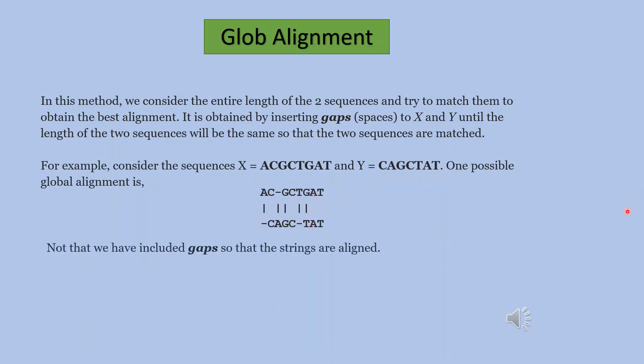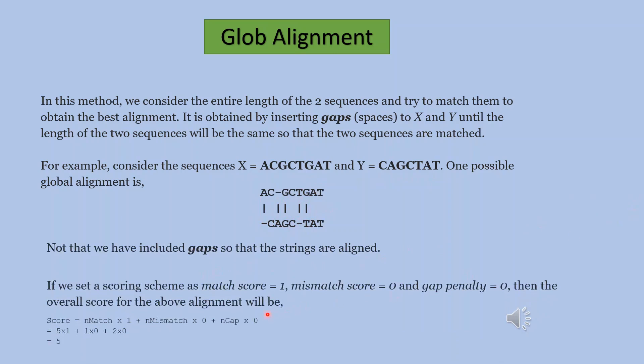Note that we have included gaps so that the strings are aligned. If we set a scoring scheme as match score equals one, mismatch score equals zero, and gap penalty equals zero, then the overall score for the above alignment will be score equal to n match multiplied by one plus n mismatch multiplied by zero plus n gap multiplied by zero equals five multiplied by one plus one multiplied by zero plus two multiplied by zero equals five.